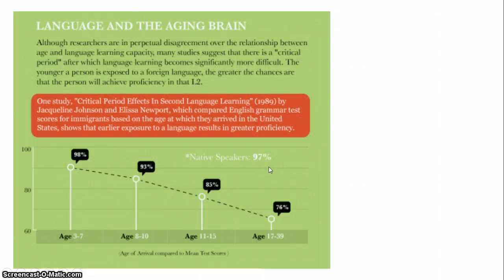Additionally, and this is more data that shows the impact of language being innate, a study was done by Johnson and Newport that identified language learners or immigrants who came to the United States and English was not their first language. And they found that those who came to the United States between the age of three and seven were able to score the highest, as you can see from the graph, 98% on an English grammar comprehension test. Whereas those who came between eight and ten, 93%.